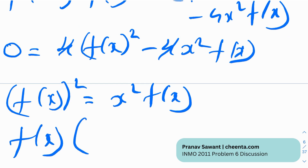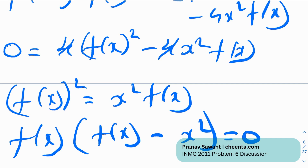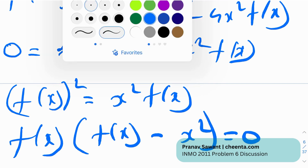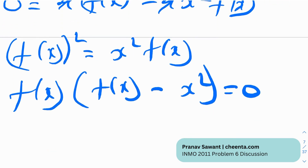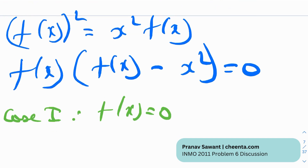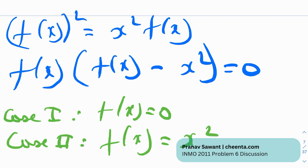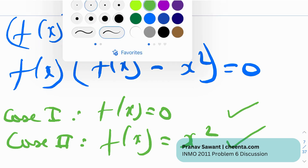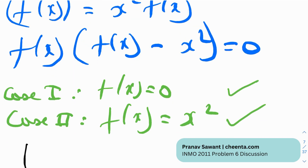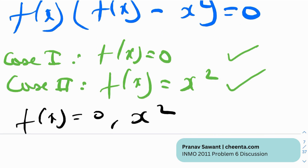We can factor this as f(x)·(f(x) − x²) = 0. This gives us two cases: Case 1: f(x) = 0, and Case 2: f(x) = x². Both of these are valid solutions — you can plug them back into the original equation to verify. So f(x) = 0 and f(x) = x² are both solutions.